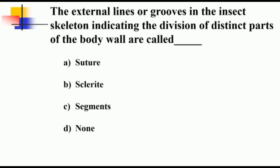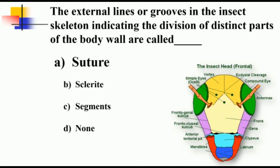The external lines or grooves in the insect skeleton indicating the division of distinct parts of the body wall are called sutures. These sutures are product of sclerotization and they divide the head capsule of a matured insect into different regions.